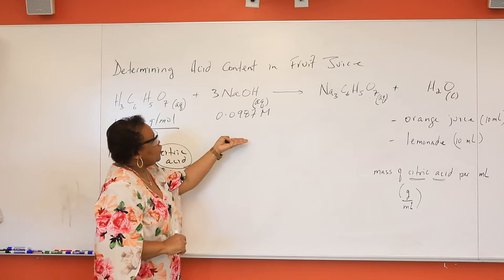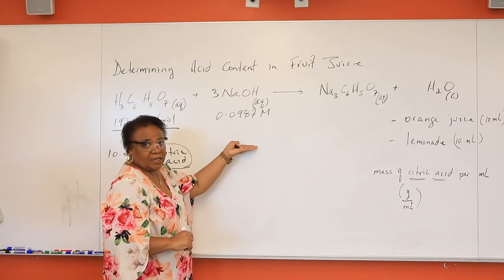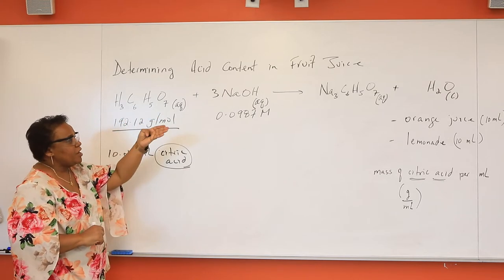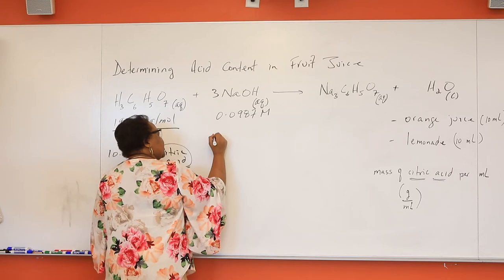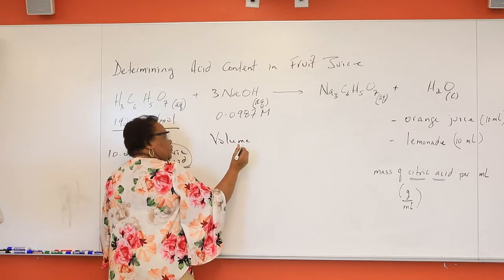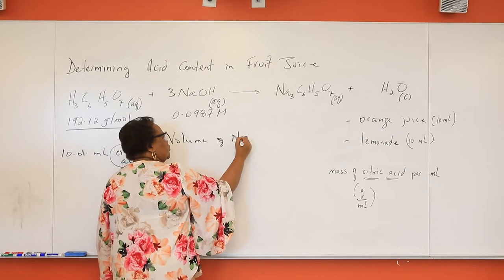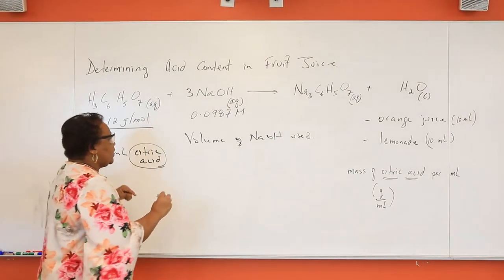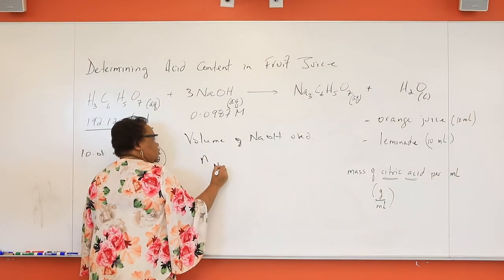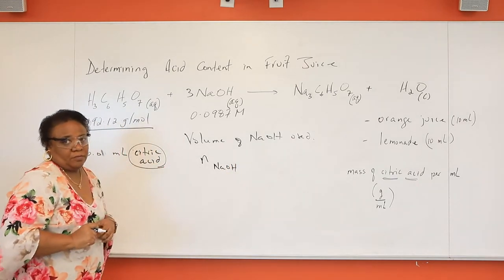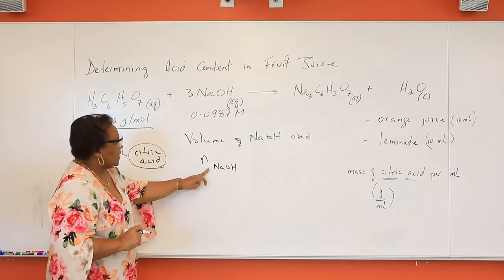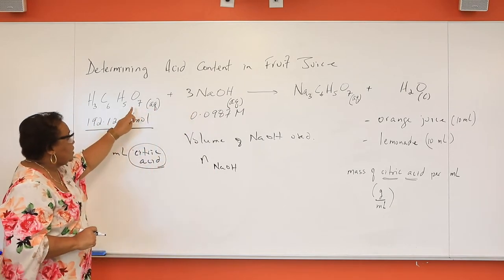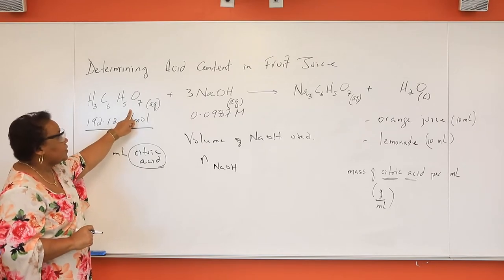We know for certain that if we know the moles of sodium hydroxide, we can determine the moles of the other reactant or product in a balanced equation. From our experiment, you need to first calculate the volume of sodium hydroxide that was used in your titration. From the volume and the molarity, we can calculate the moles of sodium hydroxide. However, I also need for you to take a minute to note that the moles of sodium hydroxide in this experiment is actually not equal to the moles of citric acid.